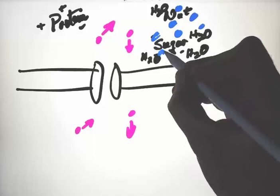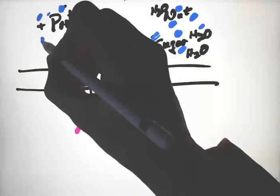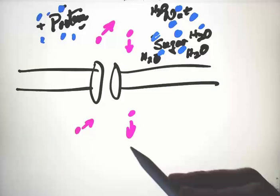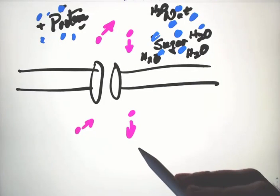All the ones that are attracted to a protein or an ion are unable to move. Therefore, they're not contributing to the net movement of water back and forth across a cell.